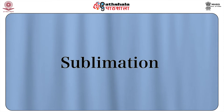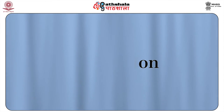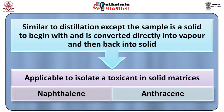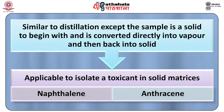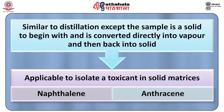The next method is the sublimation process. This is very similar to distillation except that the sample is a solid to begin with and is converted directly into the vapor phase and then back into the solid. Sublimation is applicable to isolate toxicants in solid matrices — for example, naphthalene and anthracene, which sublime.